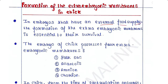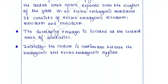In embryos that have an external food supply, the formation of the extra-embryonic membranes is essential to their survival. The embryo of chick possesses four extra-embryonic membranes: yolk sac, allantois, amnion, and chorion.